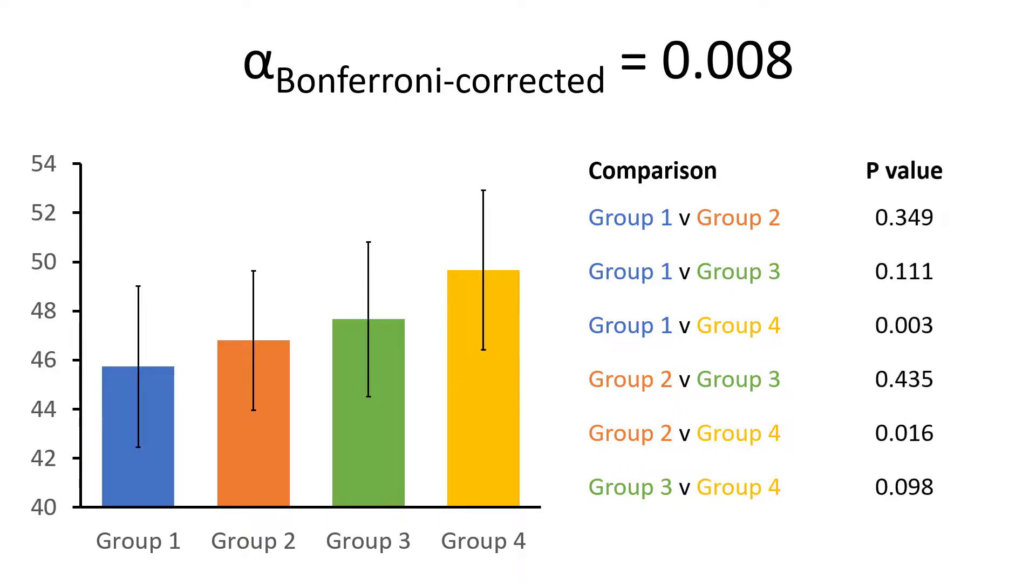Now, instead of using 0.05 as our level of significance, we now use the Bonferroni corrected alpha of 0.008. So we can only deem the result to be statistically significant if the p-value is less than or equal to 0.008. And by looking at the p-values, we can see that there is only one significant result between groups 1 and 4 after correcting for multiple comparisons through the Bonferroni procedure.